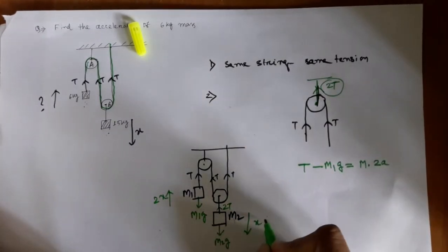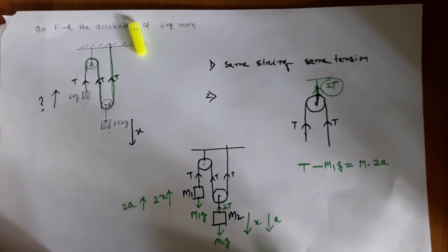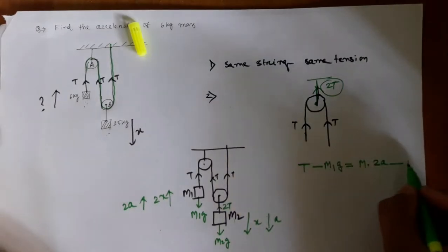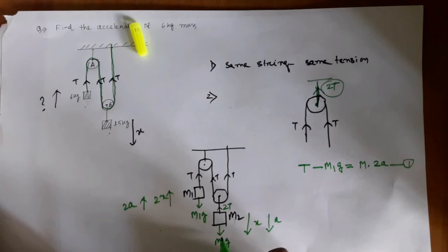It will be twice a. How can you see this? If M2 is going down x distance, M1 is going up twice x distance. So if the acceleration of M2 is a, the acceleration of M1 must be 2a. So this is the first equation.